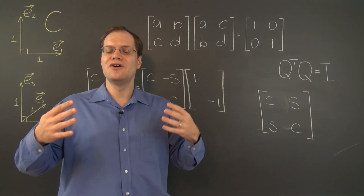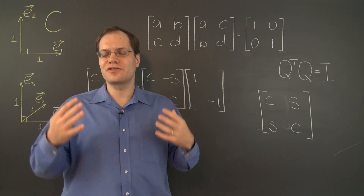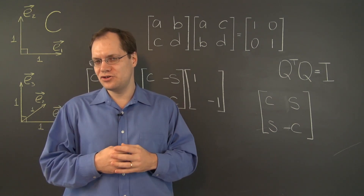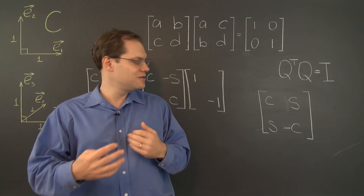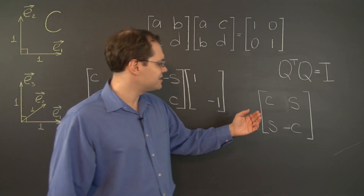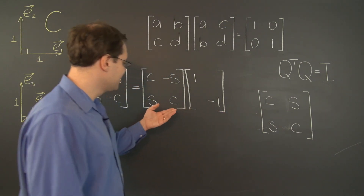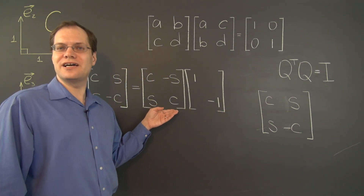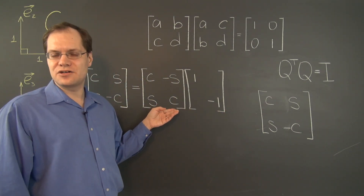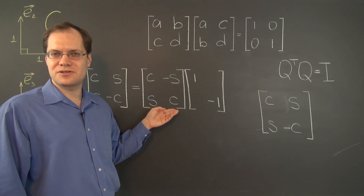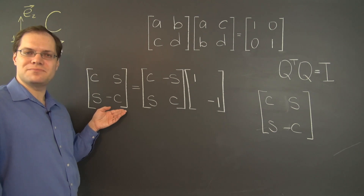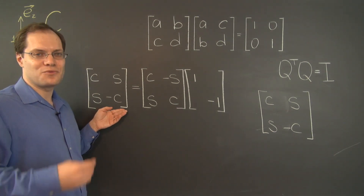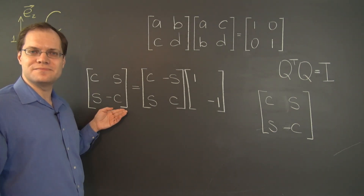We have discovered what all orthogonal 2x2 matrices look like: they are either a standard rotation matrix, or a rotation matrix combined with a reflection.